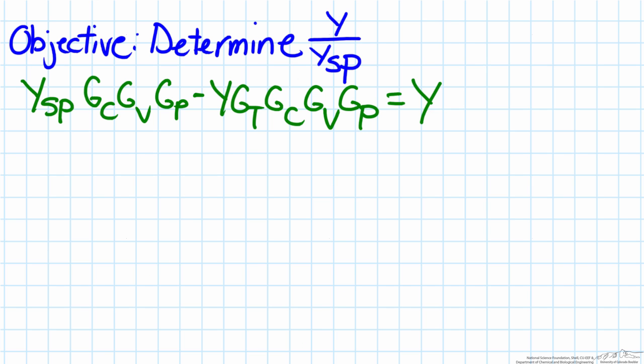The best way to put this equation in terms of y over ysp is to gather the y terms on one side of the equation, the ysp terms on the other, so we'll move the second term on the left hand side over to the right hand side.